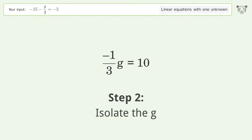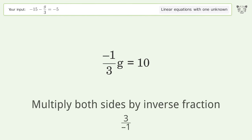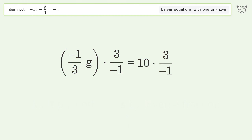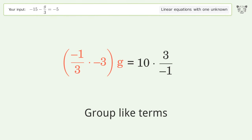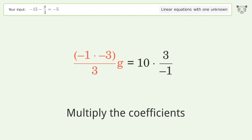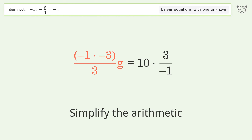Isolate g by multiplying both sides by the inverse fraction 3 over negative 1. Group like terms, multiply the coefficients, and simplify the arithmetic.